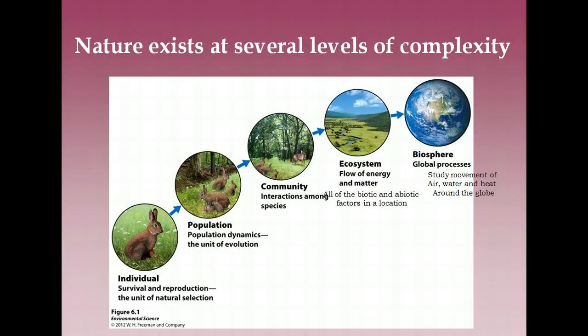The environment around us exists at a series of increasingly complex levels. The simplest level is the individual, which is a single organism, and natural selection operates at this level because it's the individual that must survive and reproduce. A population is the next level of complexity, composed of all the individuals that belong to the same species. Evolution occurs at the level of population.